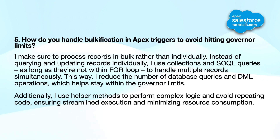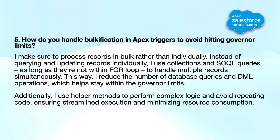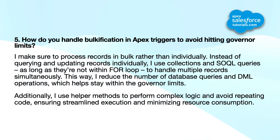Fifth question: how do you handle bulkification in Apex triggers to avoid hitting governor limits? I make sure to process records in bulk rather than individually. Instead of querying and updating records one at a time, I use collections and SOQL queries outside of for loops to handle multiple records simultaneously. This reduces the number of database queries and DML operations. I also use helper methods to perform complex logic, avoiding code repetition and minimizing resource consumption.